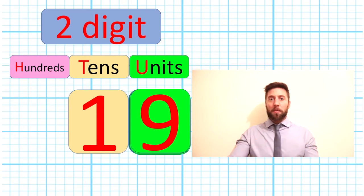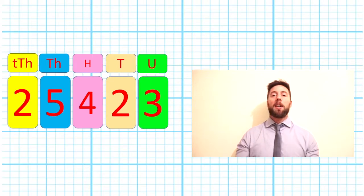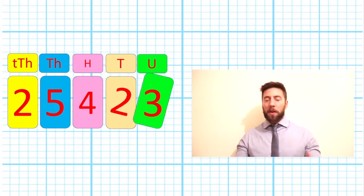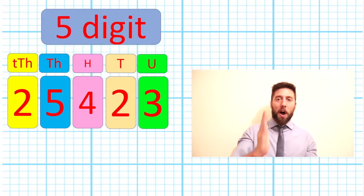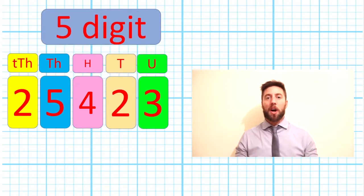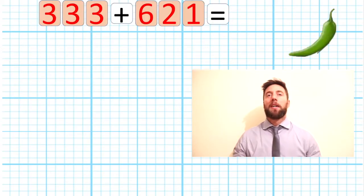The number nineteen is double digit, we've got a one and a nine, nine in our units, one in our tens. If we look at a great big number, twenty-five thousand four hundred and twenty-three, that's a five-digit number because we've got five digits going along our place value chart.